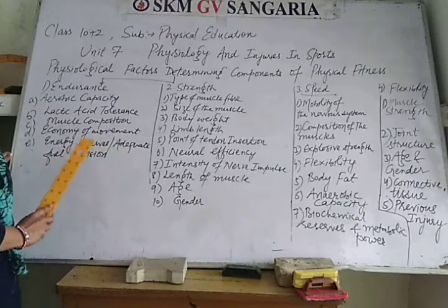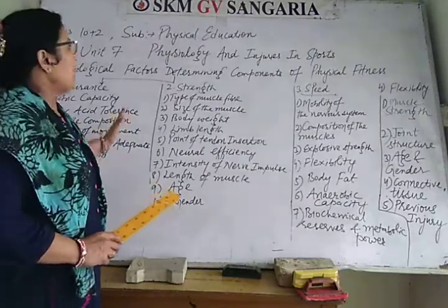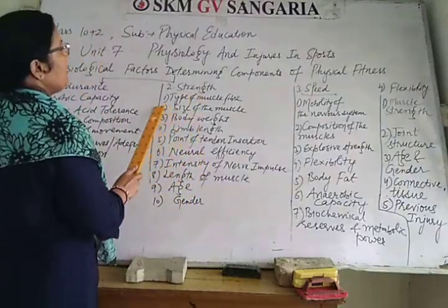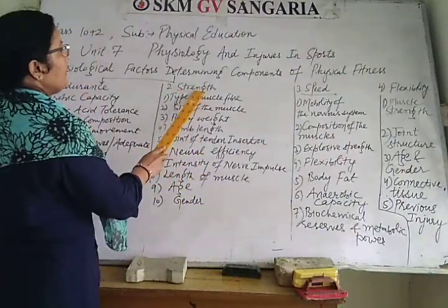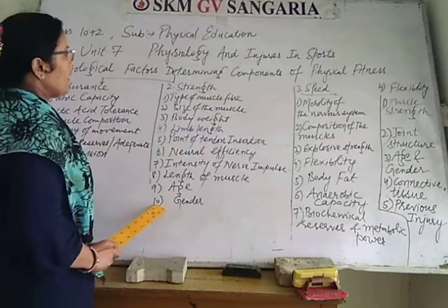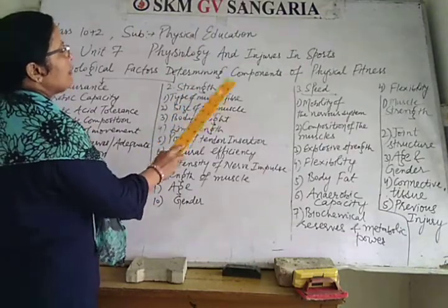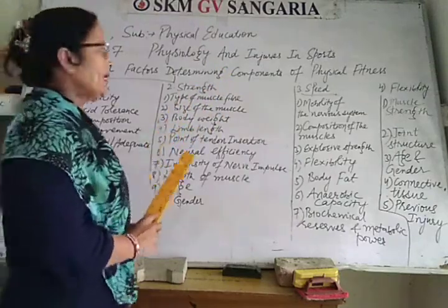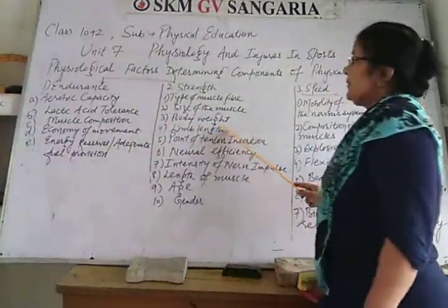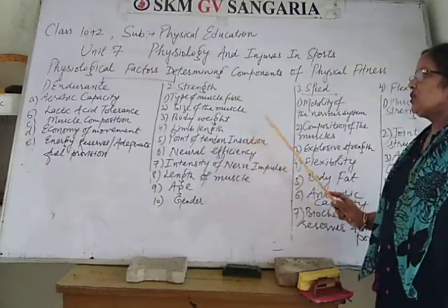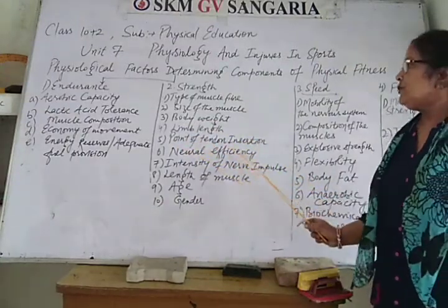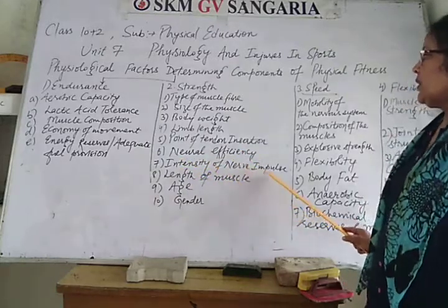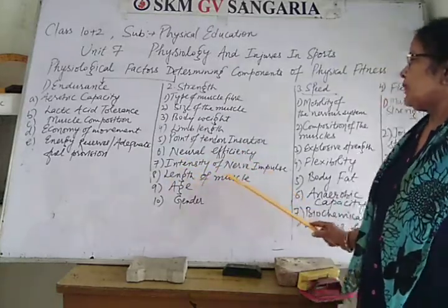These factors determine strength. Strength is determined by: number 1, type of muscle fiber; size of the muscle; body weight; limb length; point of tension; exertion; neural efficiency; intensity of nerve impulse; and length of muscle.